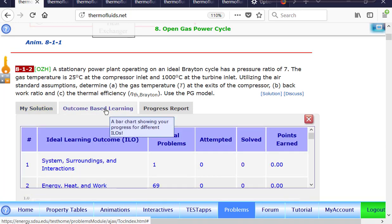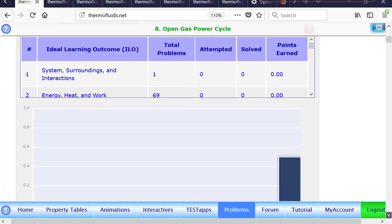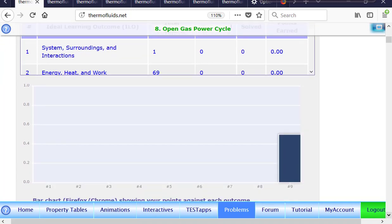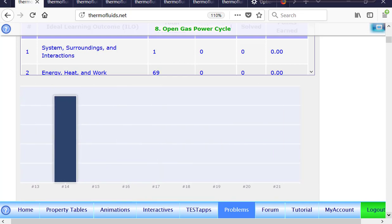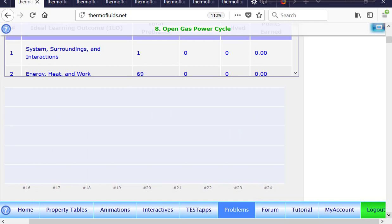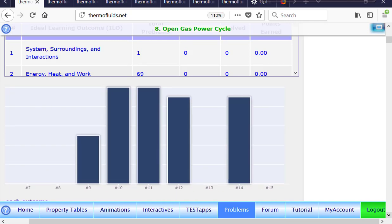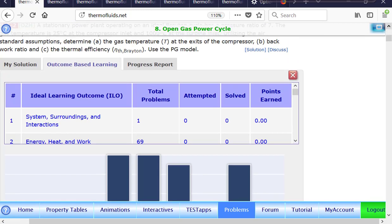And what it means is that every problem in TEST has been assigned one or more learning outcomes. So when you solve a problem, these bar charts will show your progress in different outcomes. Thermodynamics has been divided into 24 learning outcomes. And the more problems you solve of a particular type, you can become an expert in at least one particular outcome.